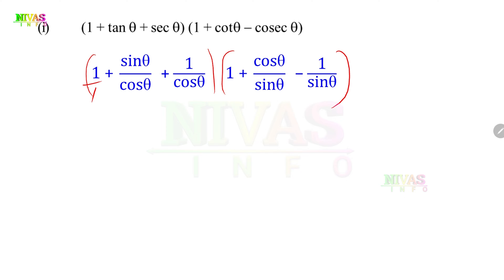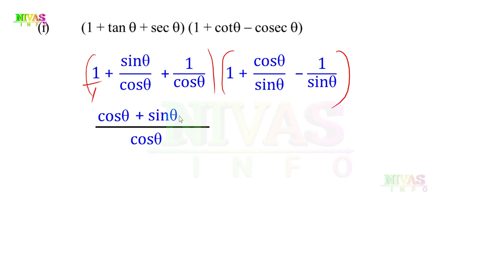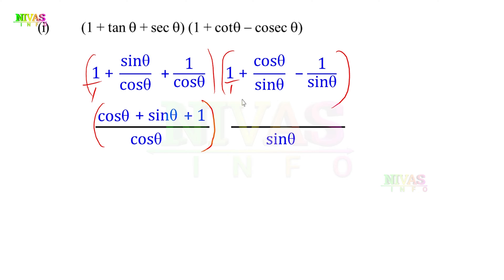Now the second bracket. We change the fractions to have a common denominator. The LCM is sinθ. Here cosecθ is 1 by sinθ and cotθ is cosθ by sinθ. So the second bracket becomes (sinθ + cosθ - 1) over sinθ.